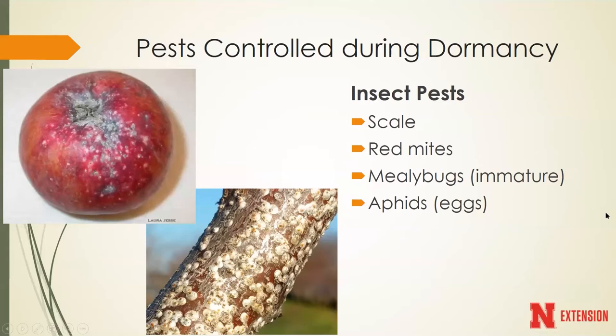The main insect pests we think about controlling during dormancy include scale insects, which are very well controlled during this time, certain mites, mealybugs - particularly the immature stages - and also aphids. Even though a lot of these insects may not be active, some of the products we can use for dormant season applications are able to penetrate the eggs or overwintering structures that the insects have in order to achieve the control we're after.